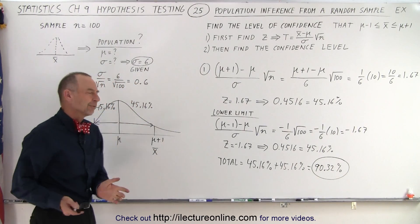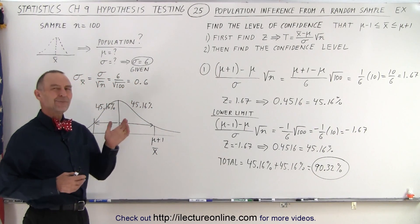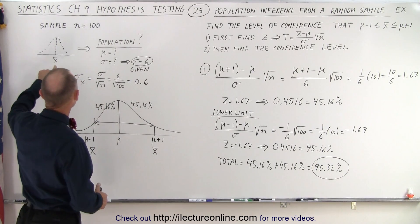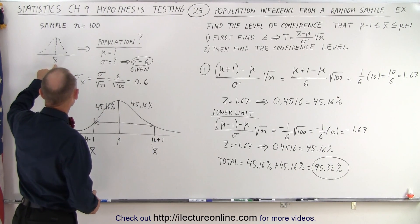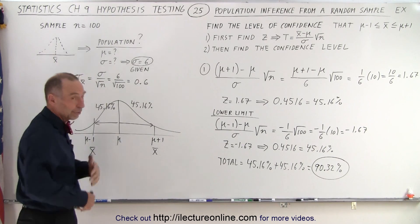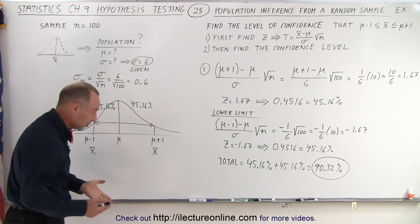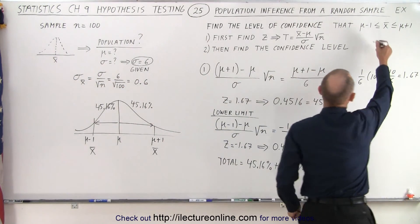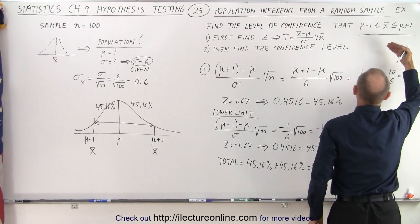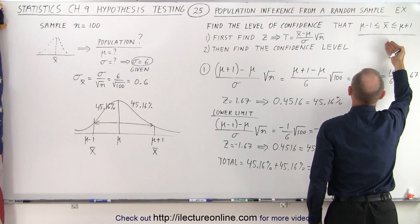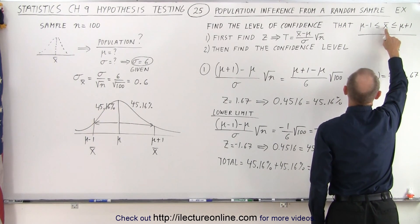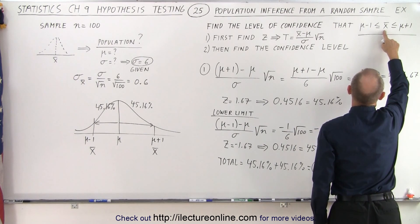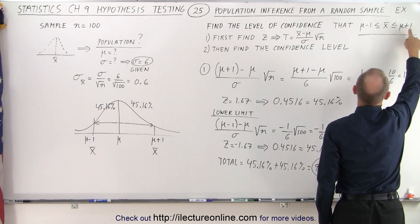I have to think about this for a moment because it seems a little backwards. We're getting a sample, we find out what the mean of the sample is, and then we want to infer something about the mean of the population. The key statement is that we want to find the confidence level — the level of confidence that the mean of the sample is less than or equal to the mean of the population plus one, or that it's greater than or equal to the mean of the population minus one.